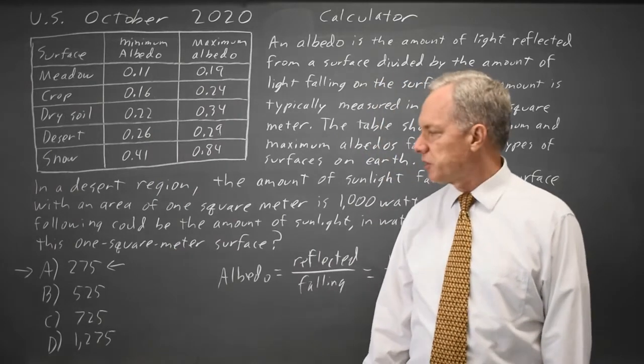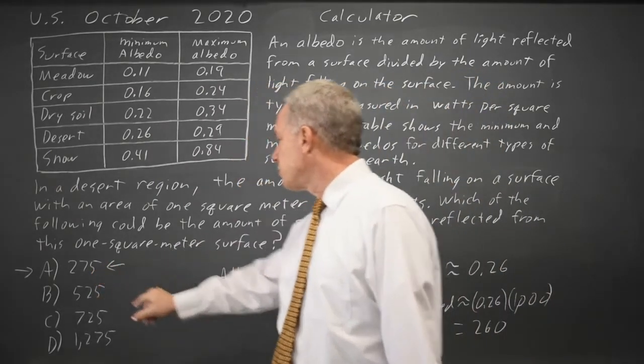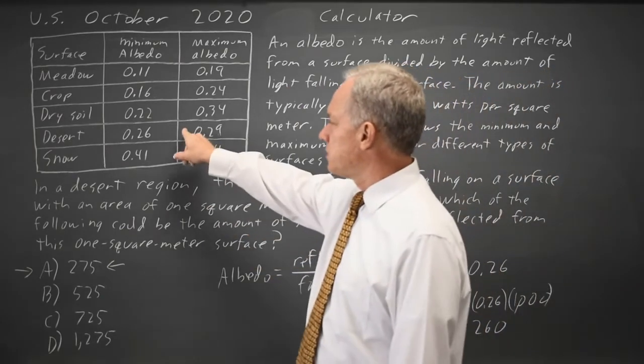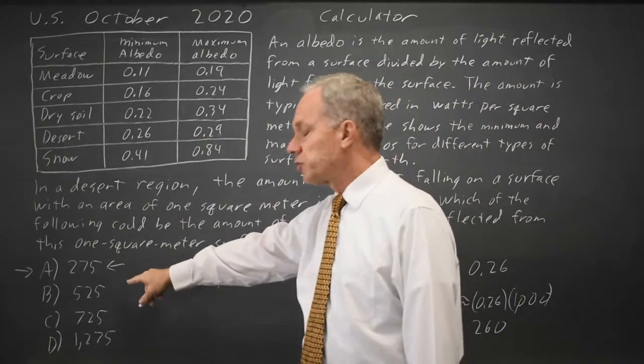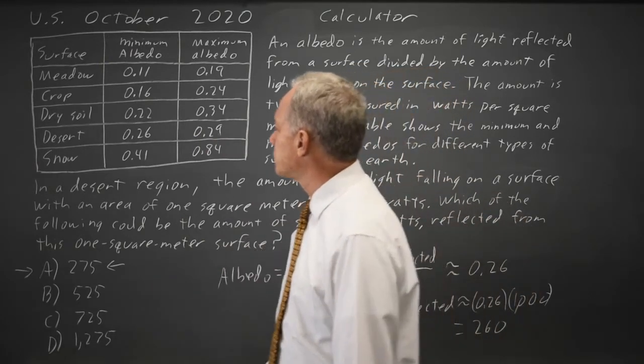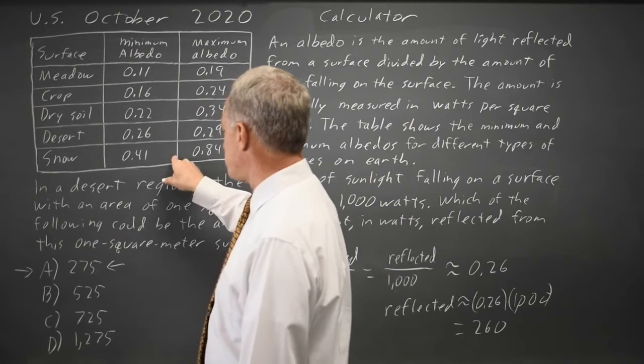Alternatively, I could find the albedo for each of these. 275 over 1,000 is 0.275, which is in the range for desert. 525 over 1,000 gives me 0.525, which is only in the range for snow.